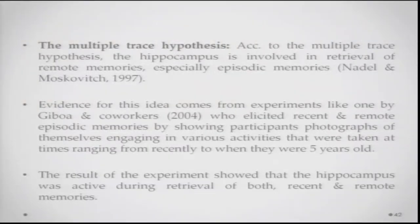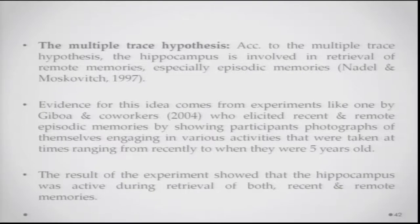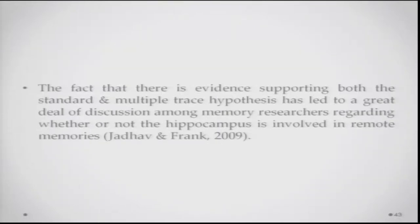The other model is the multiple trace hypothesis. According to this hypothesis, the hippocampus is involved in retrieval of remote memories, especially episodic memories. Evidence comes from experiments by Geboa and co-workers who elicited recent and remote episodic memories by showing participants photographs from age 5 up to very recent ones. Results showed the hippocampus was active during both recent and remote memories, leading to much discussion about whether the hippocampus is involved in retrieval of remote memories.